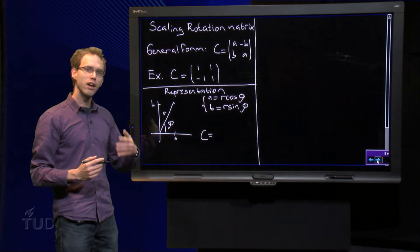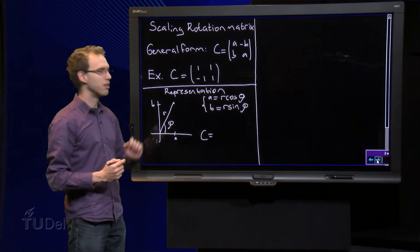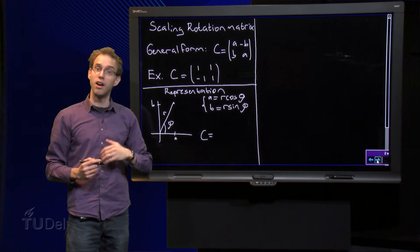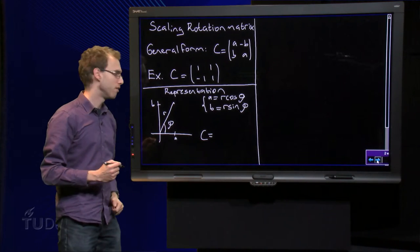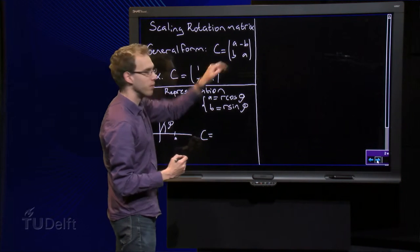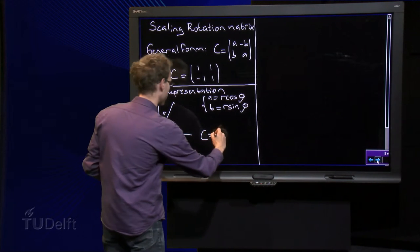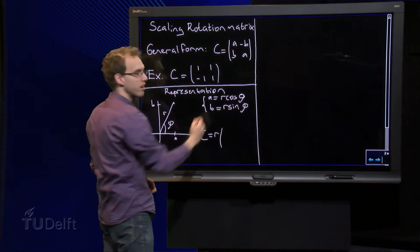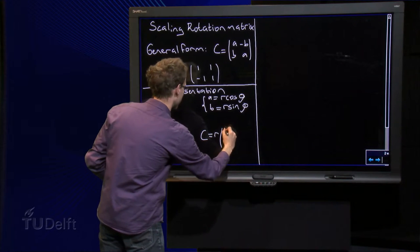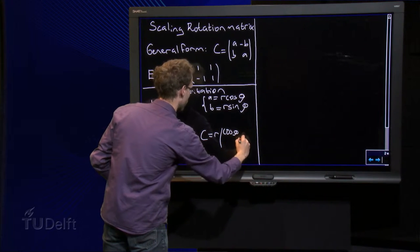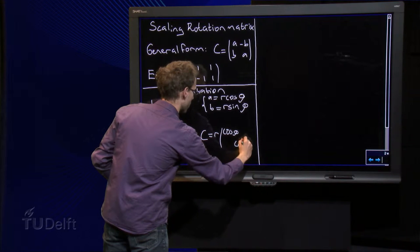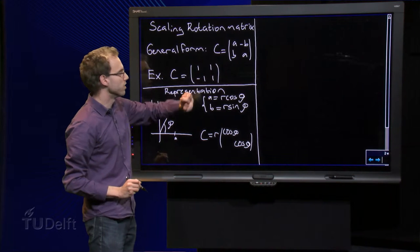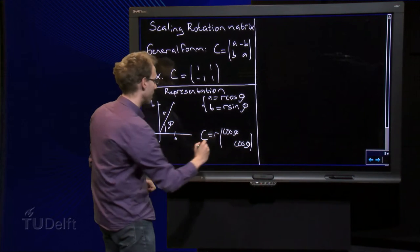Why would we do that? If we plug in A equals R cosine phi and B equals R sine phi in the specific form of C, then we find C equals—we get R's everywhere, so I can take the R out—so R in front, on the diagonal cosine phi, and off diagonal B sine phi, minus B minus sine phi.